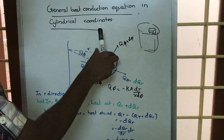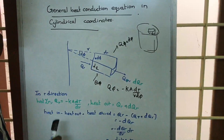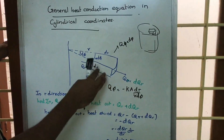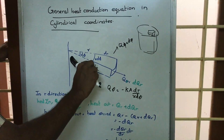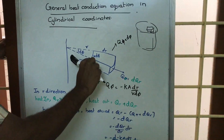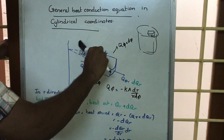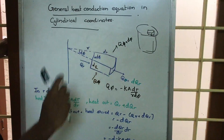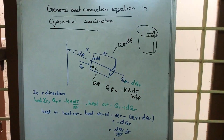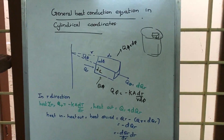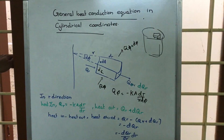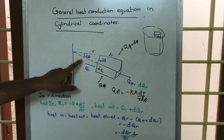So now we have every side: dz, r·dφ, and dr. If we want to find the volume of this element, it will be equal to dz · dr · r·dφ. That's the volume.